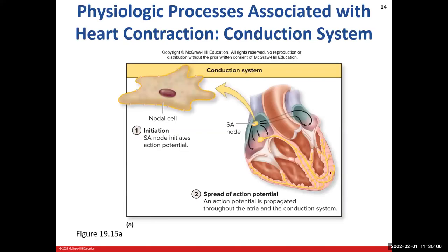Let's look at our conduction system and introduce a new player — the nodal cell. This is that non-contractile cell that in the SA node will initiate our action potential. When these cells discharge the electrical events and initiate that action potential, it spreads out everywhere like throwing a rock into a calm body of water. It will spread out and eventually be propagated, finding its way to our AV node, which will carry that signal down into the ventricle.